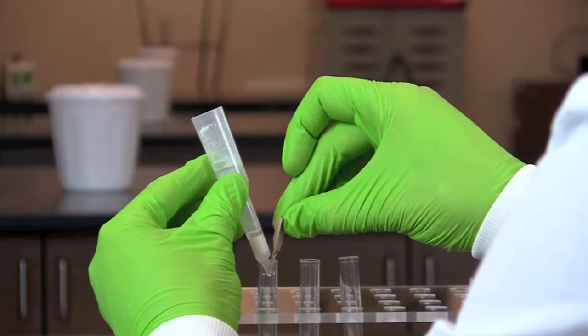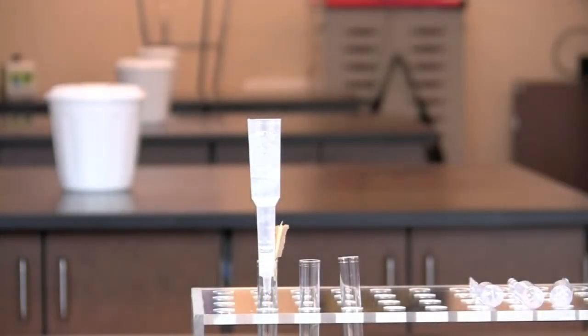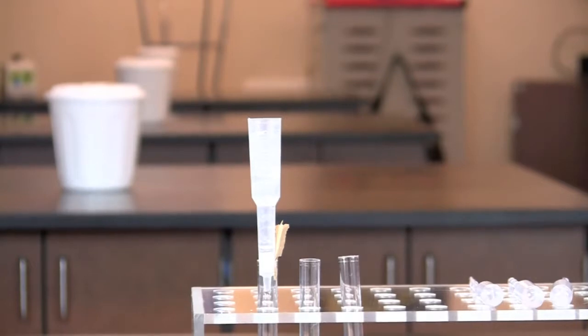Insert a small wedge of paper between the column and the collection tube to prevent the formation of an airtight seal, which would slow the flow of the sample through the column.